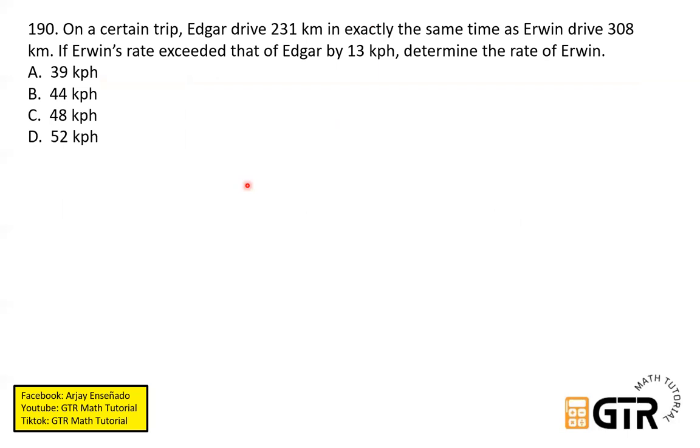So sagot na natin. Para mas madaling isolve ito, gawa tayo ng table. So sa table, lagay natin sa first column yung mga pangalan dyan. We have Edgar and Erwin. Then dito naman sa iba pang column, ilalagay natin yung d, r, and t. A formula for distance is rate times time. So lagay natin dito yung r, t, product nila ay equal sa distance.